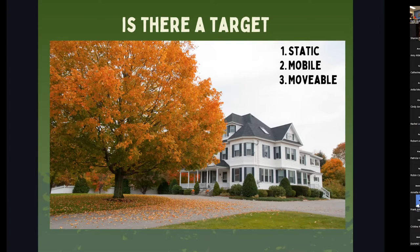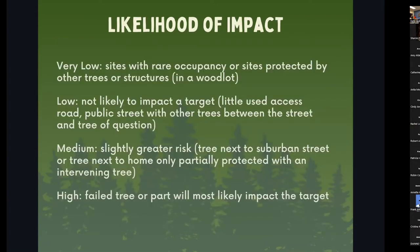The next question is: what's the likelihood of impact? This comes down to the amount of time that target is within the occupancy area - how long it's going to be within that zone. There are four ratings: very low, low, medium, and high. I think you need to understand these steps and classify them, because that will really help you make a decision. It's easy to get emotional or jump to conclusions, but if you break this down and classify the likelihood of impact, in the end it will help you make a better decision on whether that tree is a hazard or not.